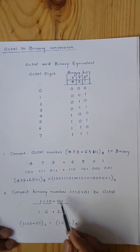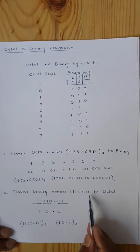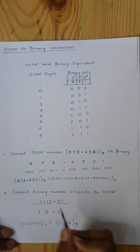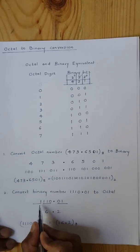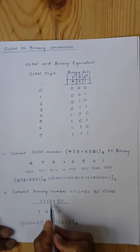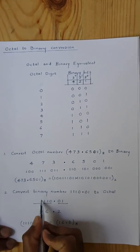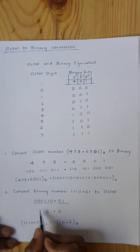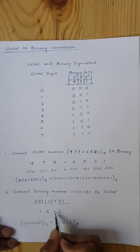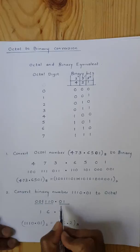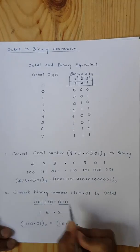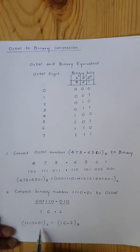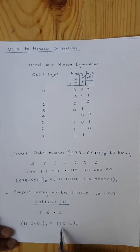Now we convert binary number 1100000 to octal. We write the binary number as it is. From the decimal point, grouping from right to left in groups of 3 bits: there is only 1 bit remaining on the left, so we add two zeros to make 001, which equals 1. Then 110 is 6. After the decimal point, we add a zero to make 010, which equals 2. Therefore, the octal equivalent of binary 1100000 is 16 point 2, that is 16.2 in octal.